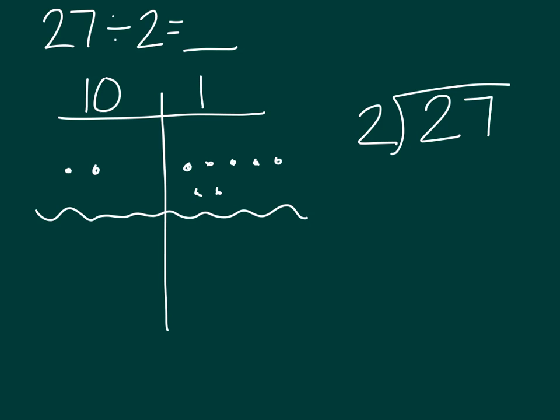I have already gotten started by stacking the problem, 27 divided by 2. I also have built the problem here, so I have 2 tens and 7 ones with my squiggly line.